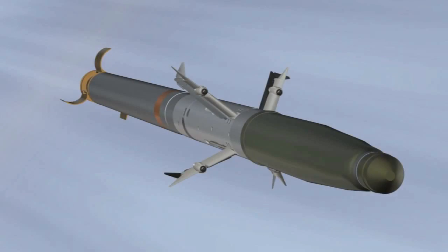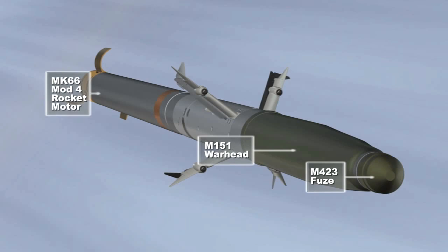The system consists of four components: the M423 fuse, the M151 warhead, the MK66 Mod4 rocket motor, and the WGU-59B guidance section.